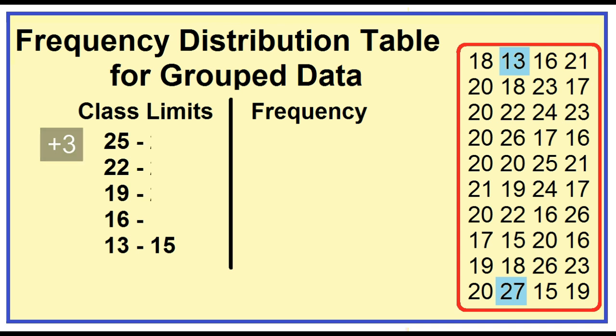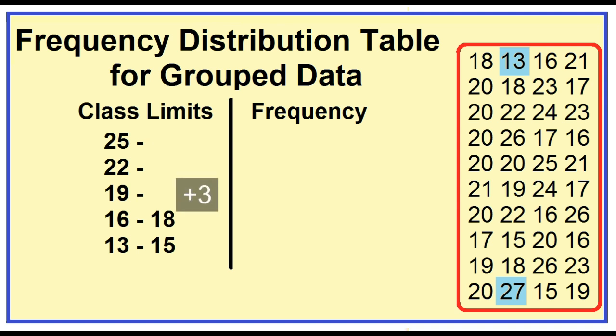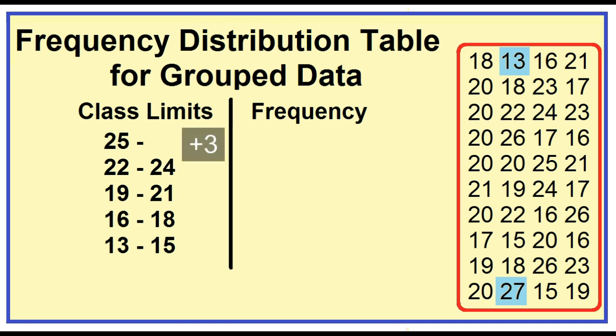To get the next upper limit, just add the class width to the previous upper limit. 15 plus 3 is 18, 18 plus 3 is 21, 21 plus 3 is 24, 24 plus 3 is 27.